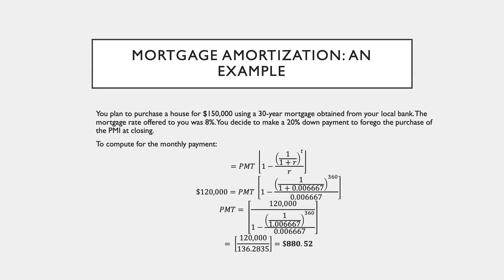This is a pretty tedious formula to do, especially when your mortgage term is as long as 30 years. So we have prepared an amortization table using an Excel spreadsheet. If you have the spreadsheet available to you, you can actually use the PMT formula in Excel, and you can also find this value using the goal seek function in Microsoft Excel.